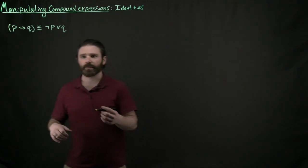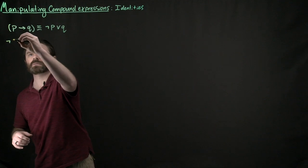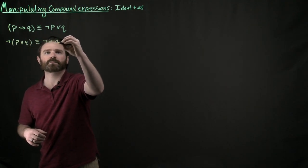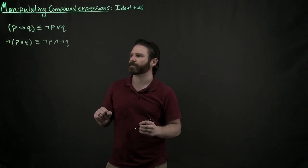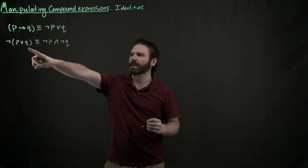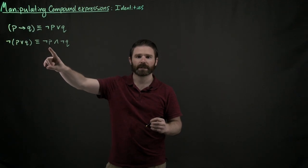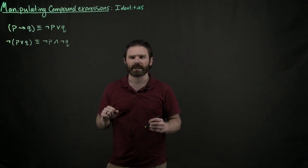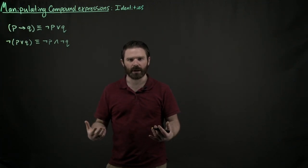We've seen another one. For example, we've seen this one in a previous video. Not P and Q is logically equivalent to not P and not Q. This one right here is actually an example of DeMorgan's Law.